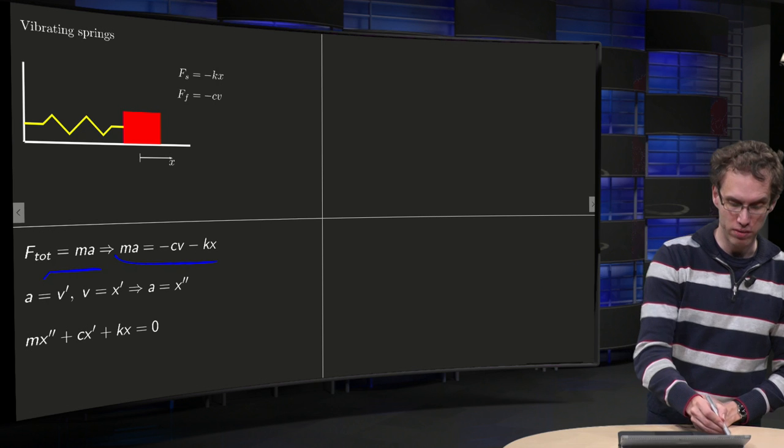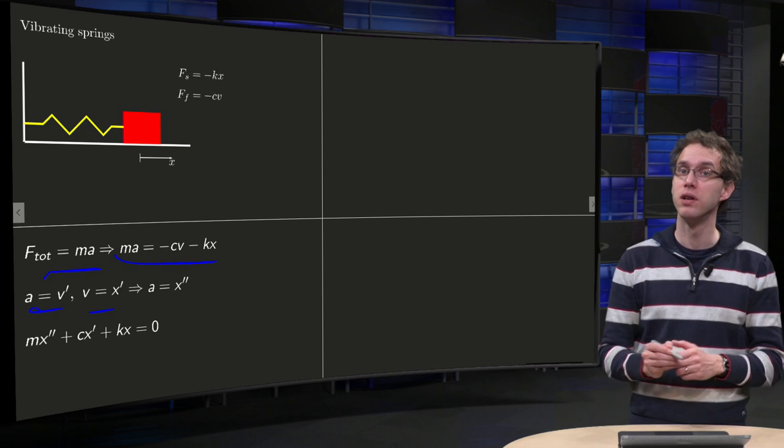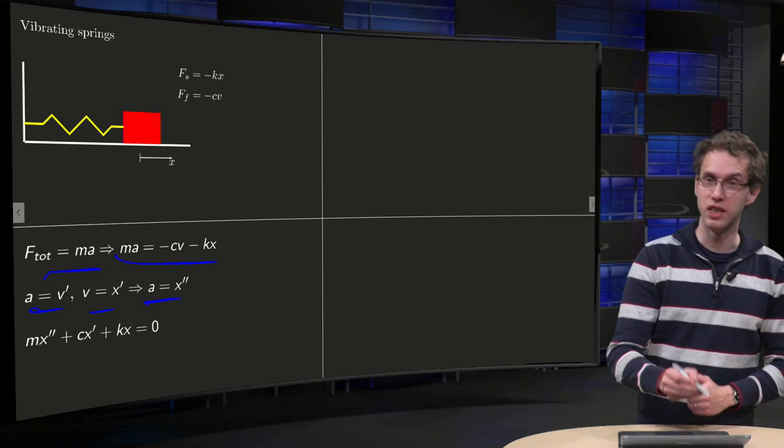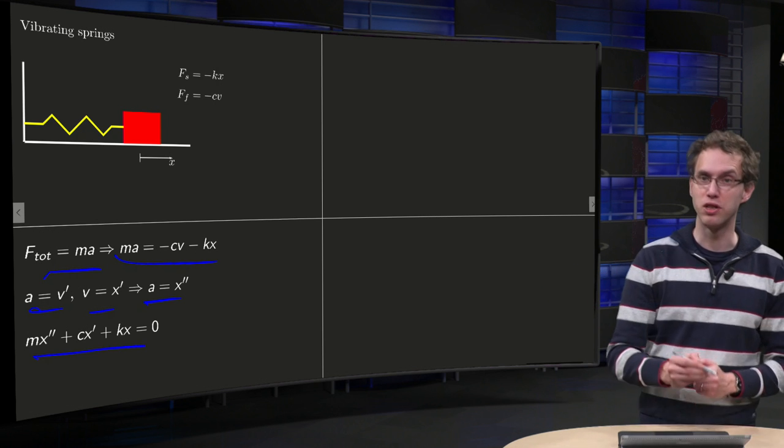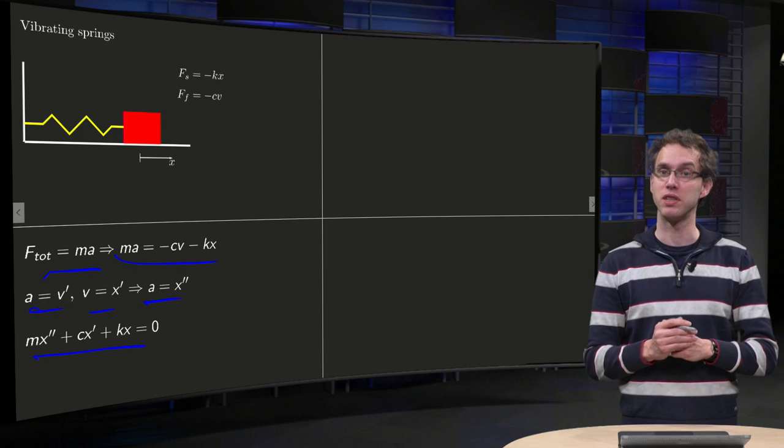Then we know a equals v prime and v equals x prime, so we know that acceleration equals x double prime, and if we plug everything in, we get mx double prime plus cx prime plus kx equals zero.